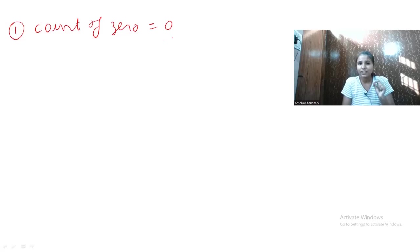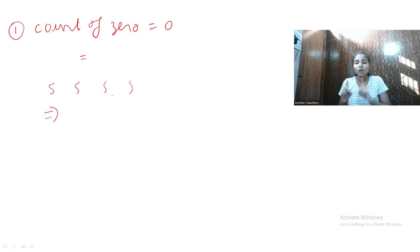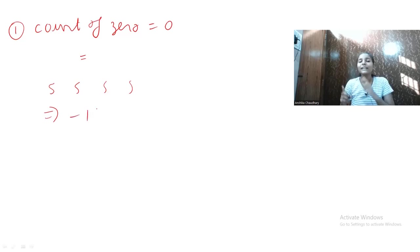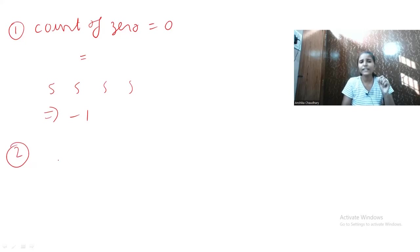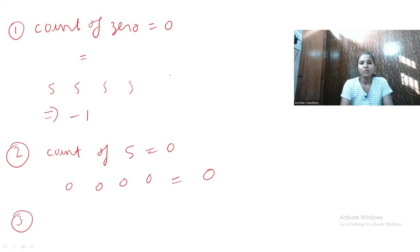There are three possibilities in our code. First: if the count of zeros in our array is zero — meaning only fives are present — then the maximum formed number cannot be divisible by 10, and therefore cannot be divisible by 90. We return -1 in that case. Second: if the count of fives is zero — meaning only zeros are present — then the answer is simply 0.